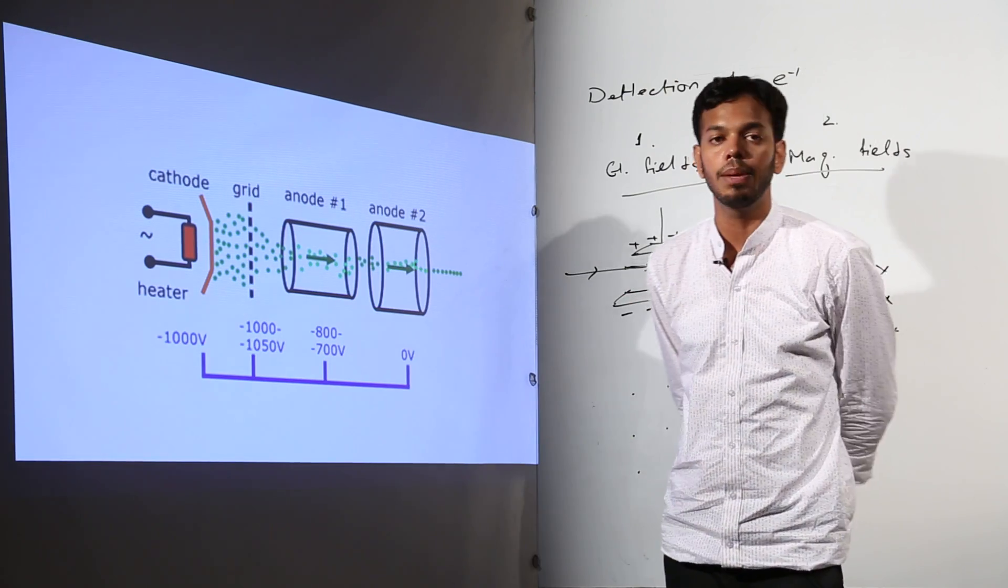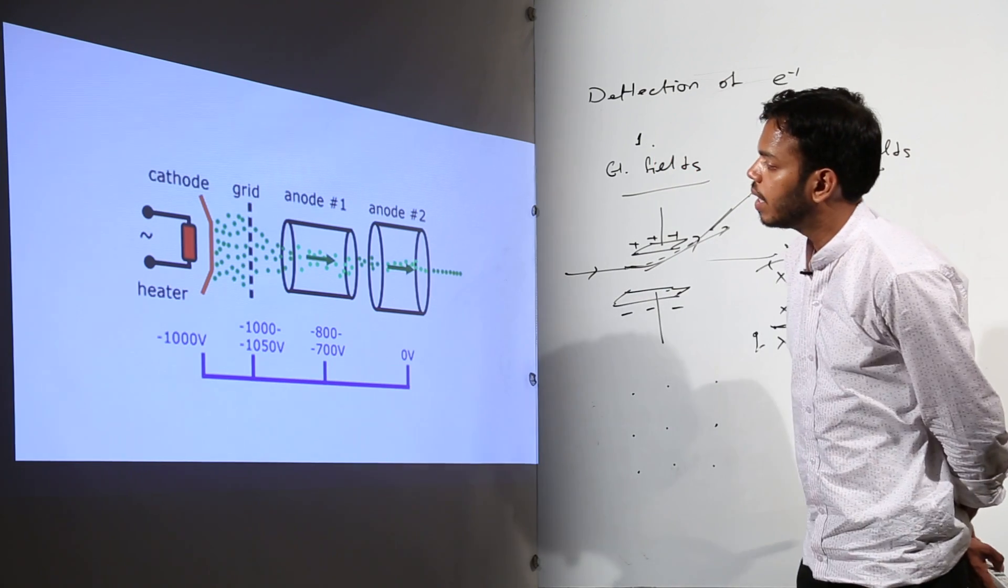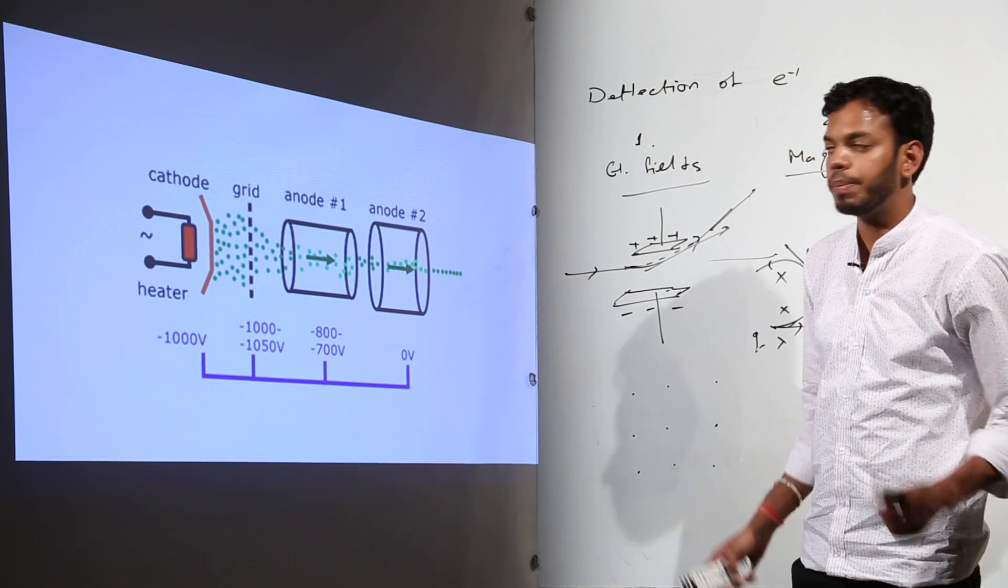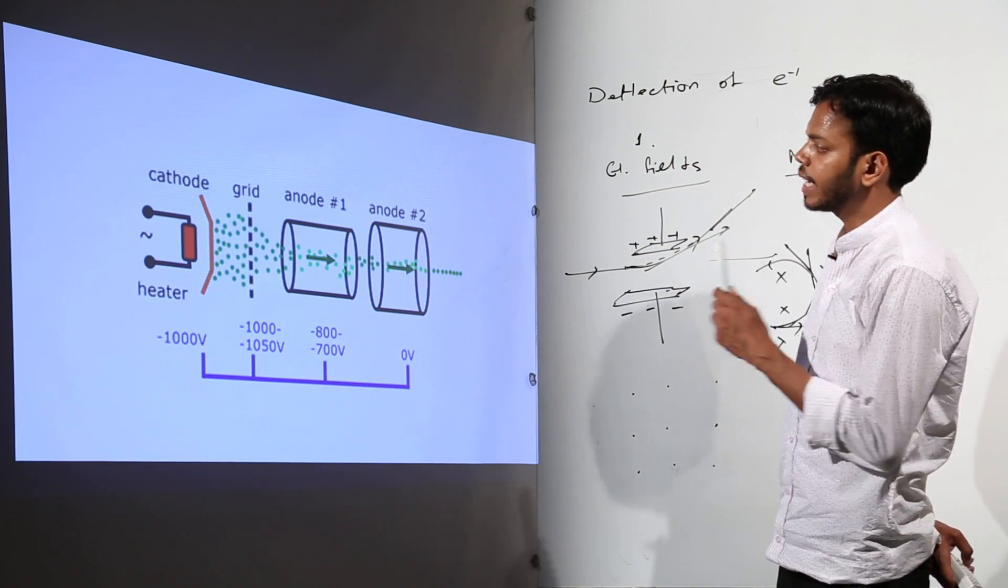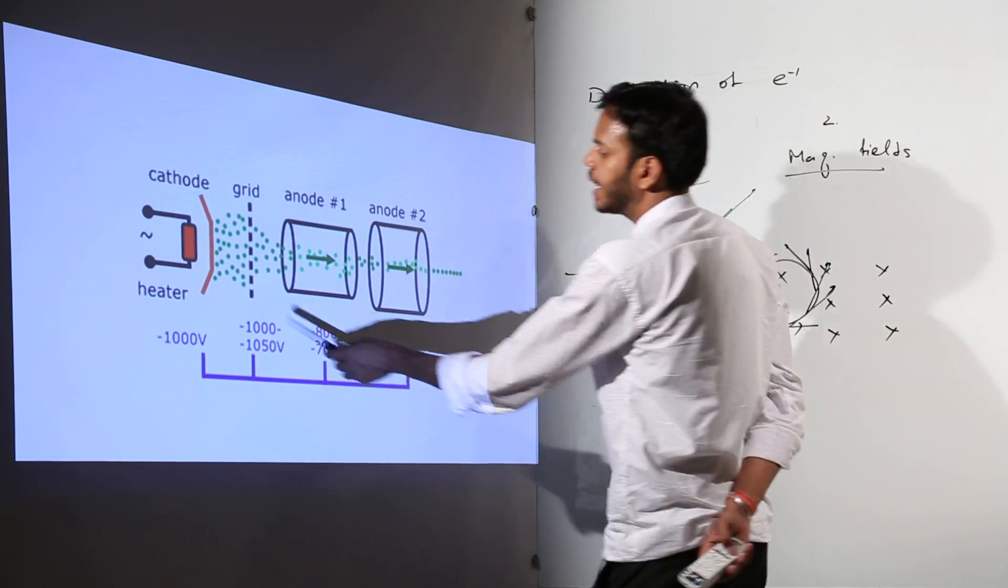Now this is the detailed diagram of this electron emission part which is this one, the electron gun. So in electron gun, cathode, this one is cathode and heated.